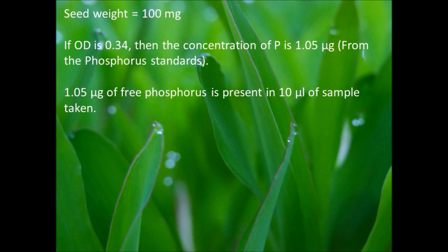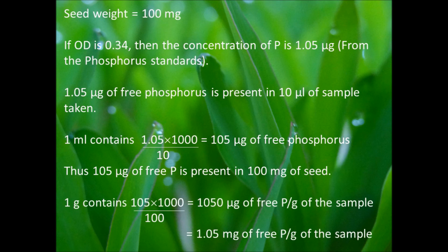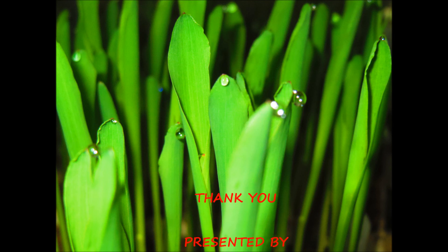which was extracted from 100 milligrams of seed. Therefore, 1 ml contains 105 micrograms of free phosphorus. Since the initial seed weight was 100 milligrams, 1 gram contains 1050 micrograms, that is 1.05 milligrams of free phosphorus per gram of the sample.